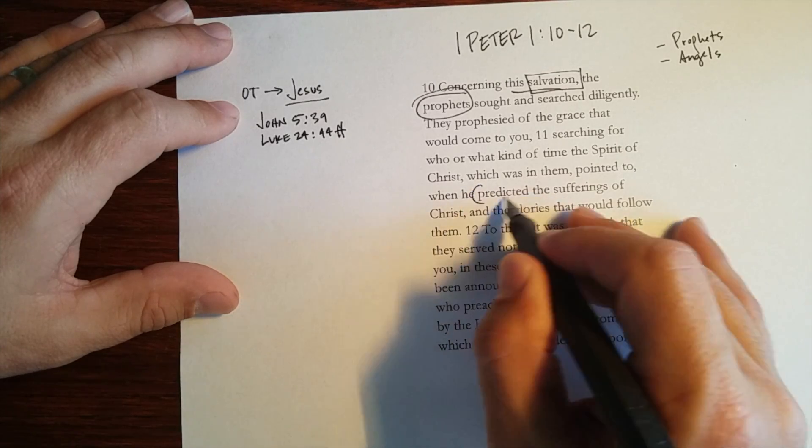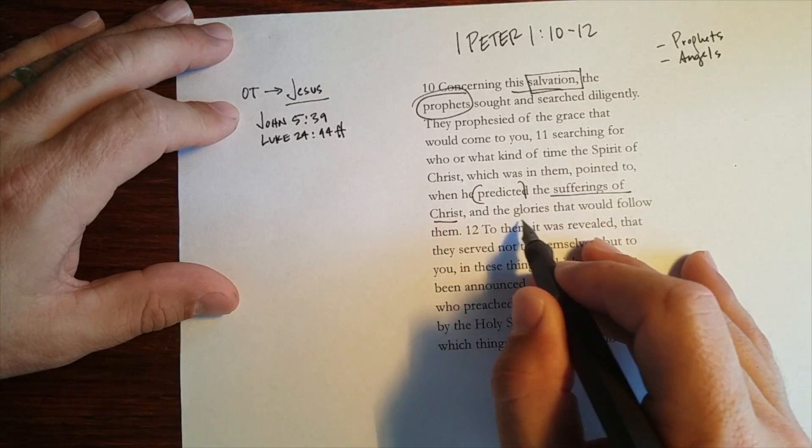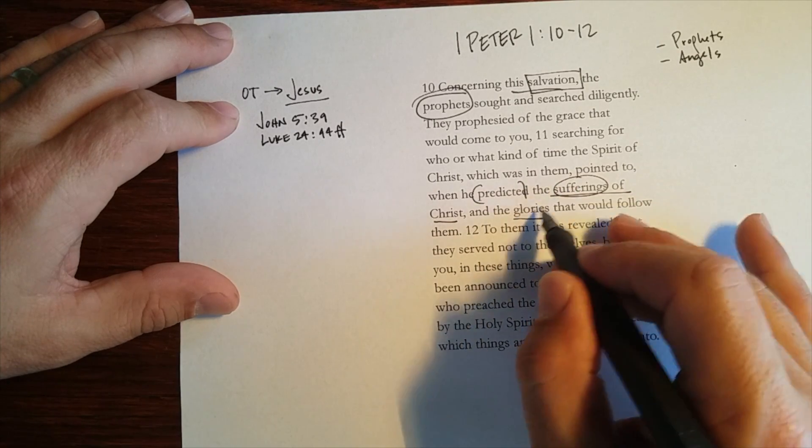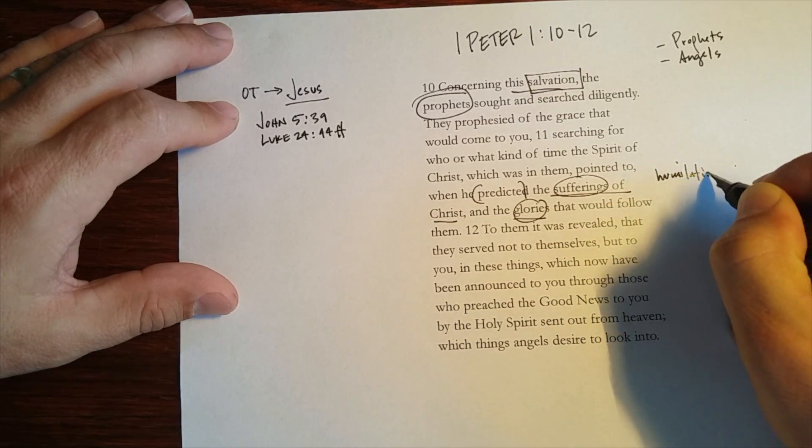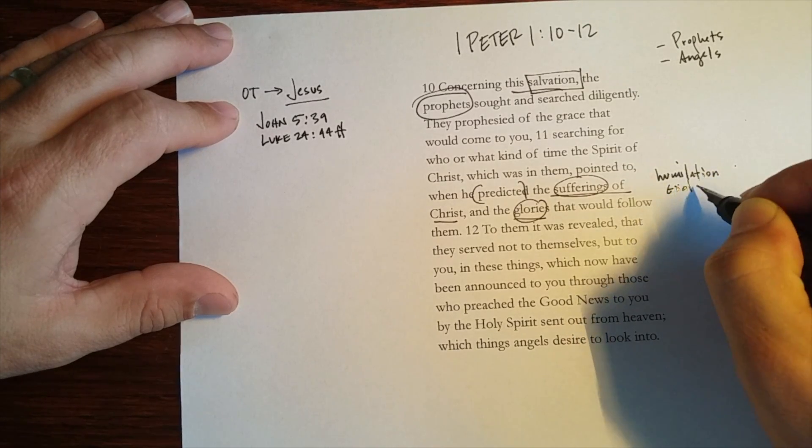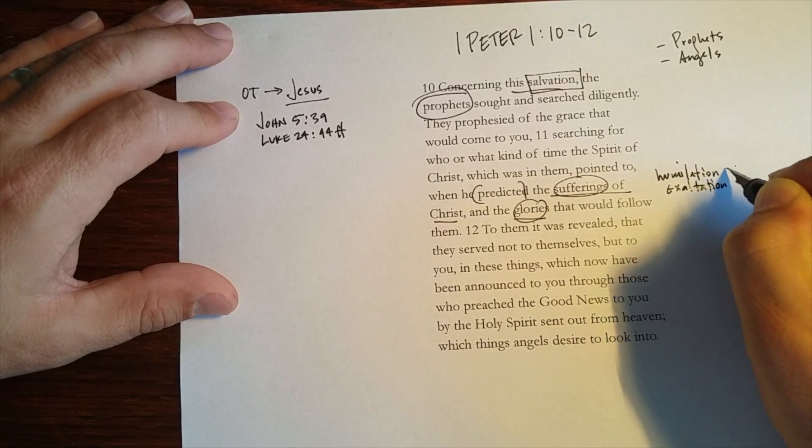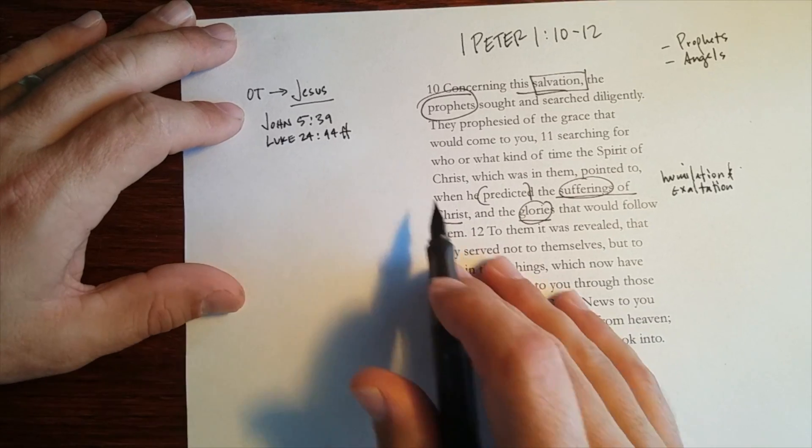And in fact, that's really almost precisely what Peter is going to talk about here, that the prophets predicted the sufferings of Christ and the glories that would follow them. So suffering and glory, humiliation and exaltation, is the content of the prophets.